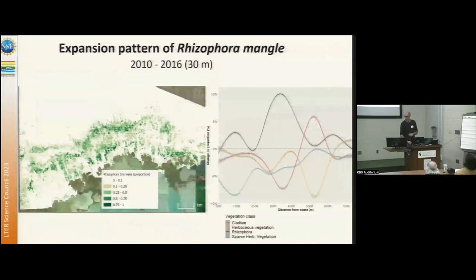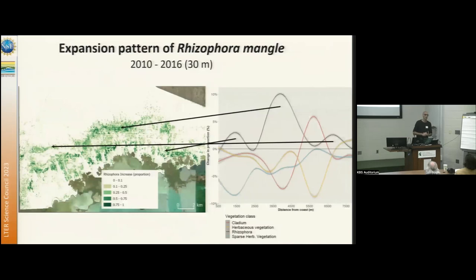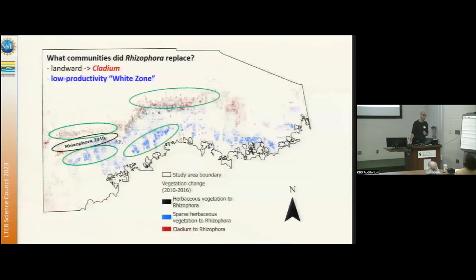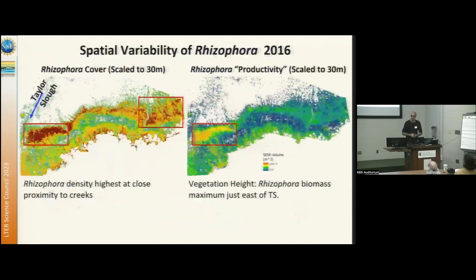We see three specific humps — the black line is mangrove change over time as a function of distance from coast on the x-axis, showing the change in proportion of cover moving inland. The three humps correlate to zones: one on the coast, one a bit further inland, and one much further inland. We confirmed that mangrove predominantly replaces cladium. The highest productivity is close to Taylor Slough, a major influx of freshwater, and a similar pattern appears on the east side near small creeks, where expansion also occurs.